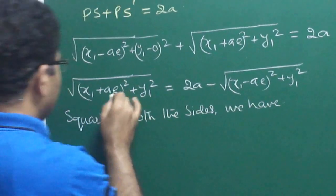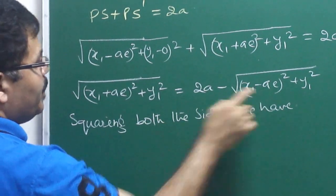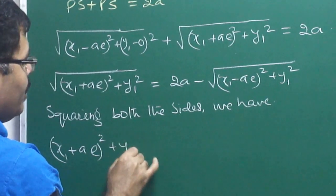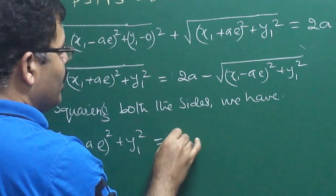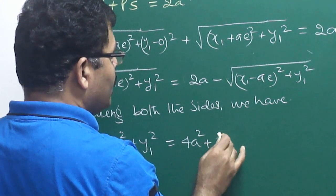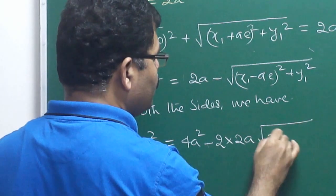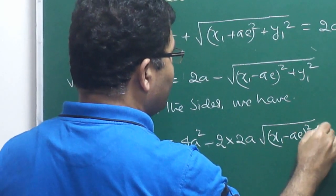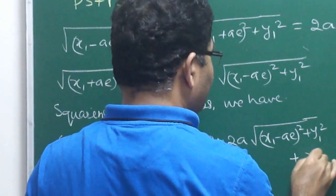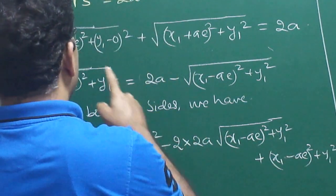On squaring, the root will be cut. We apply the (a minus b) whole squared formula: a squared minus 2ab plus b squared. So we get (x1 plus a) whole squared plus y1 squared, expanded using the formula, giving us terms including 2 into 2a times x1, minus (x1 minus a) whole squared plus y1 squared.